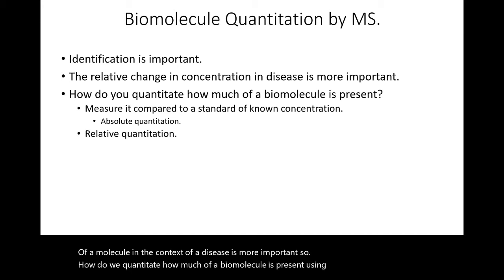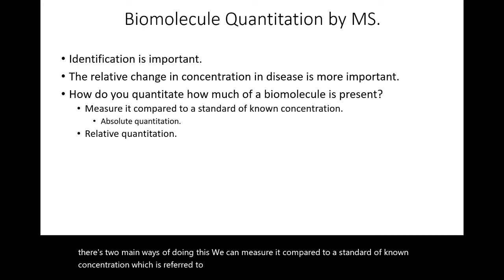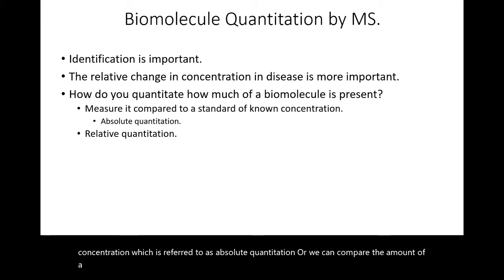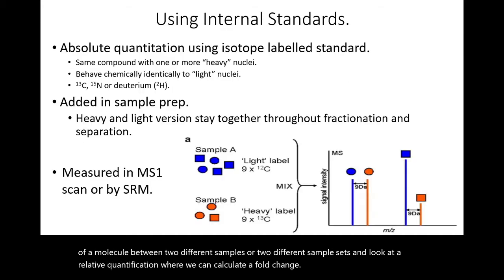There are two main ways of doing this. We can measure it compared to a standard of known concentration, which is referred to as absolute quantitation, or we can compare the amount of a molecule between two different samples or two different sample sets and look at a relative quantification where we can calculate a fold change.